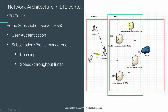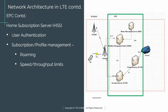Moving on — another network element is the Home Subscription Server (HSS). This element is responsible for user authentication and subscription profile management. In LTE, there is a big emphasis on security, and the way this is achieved is by allocating certain encryption keys to every subscriber. Those keys are stored in the HSS and that's the only place they are stored in the network.